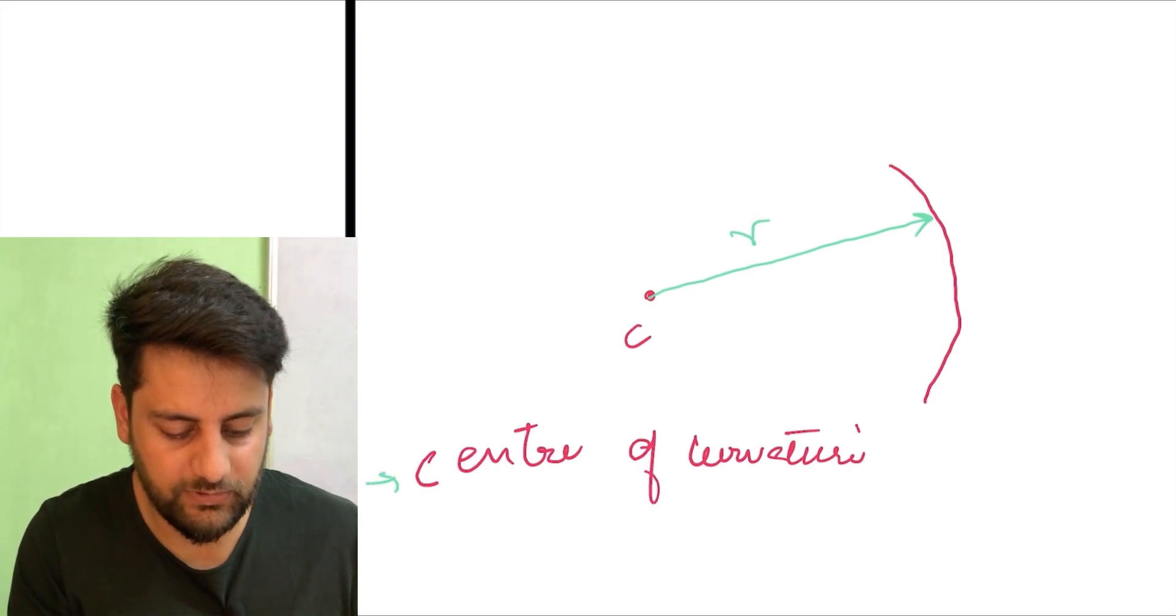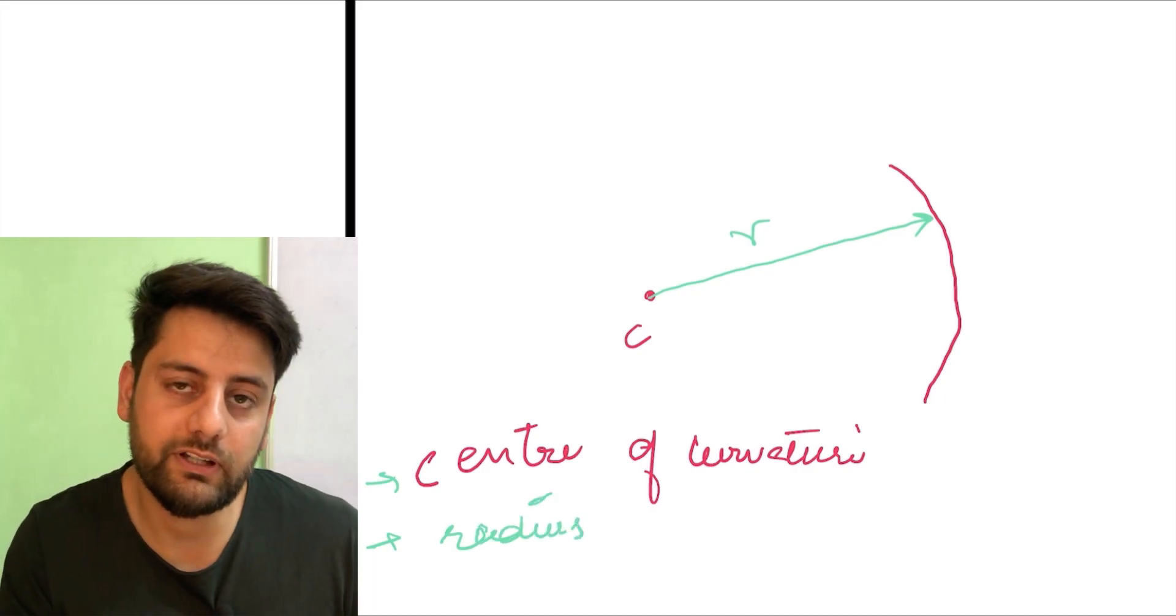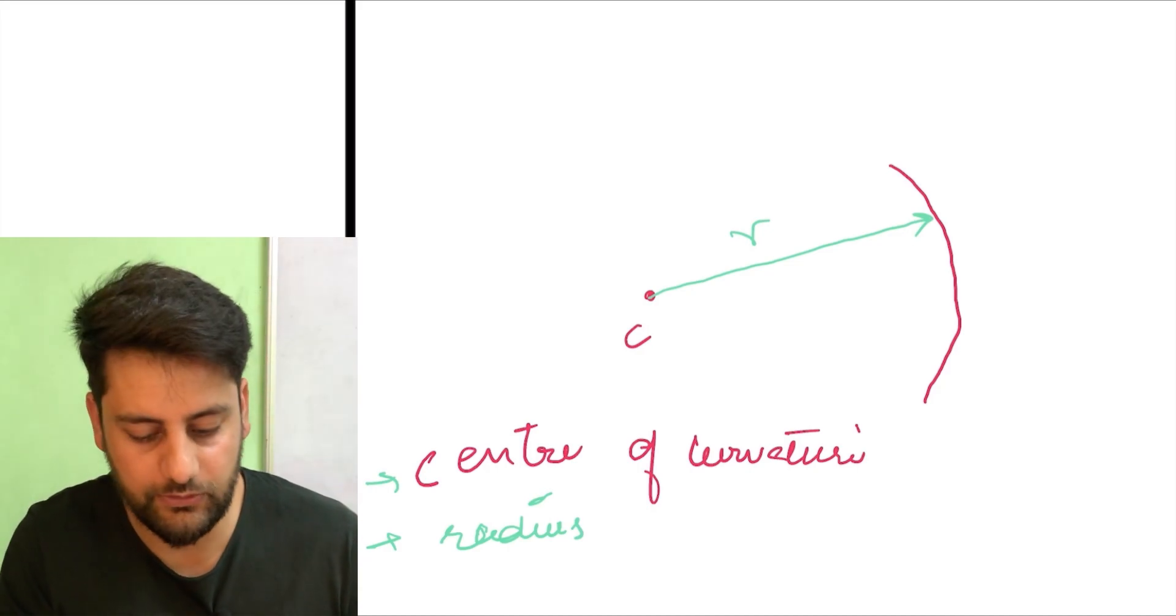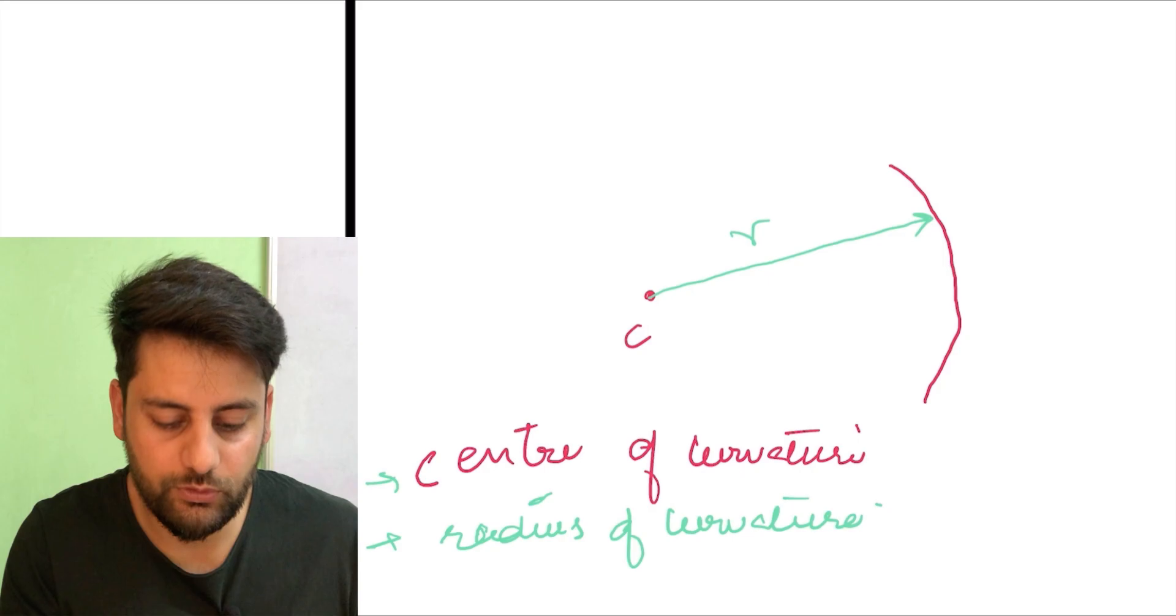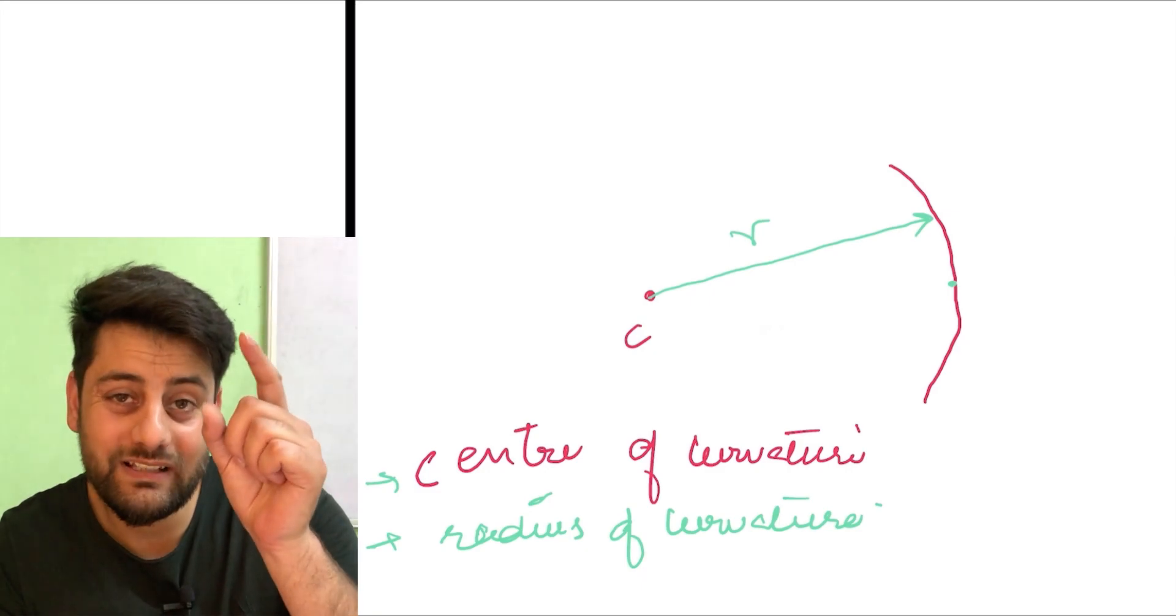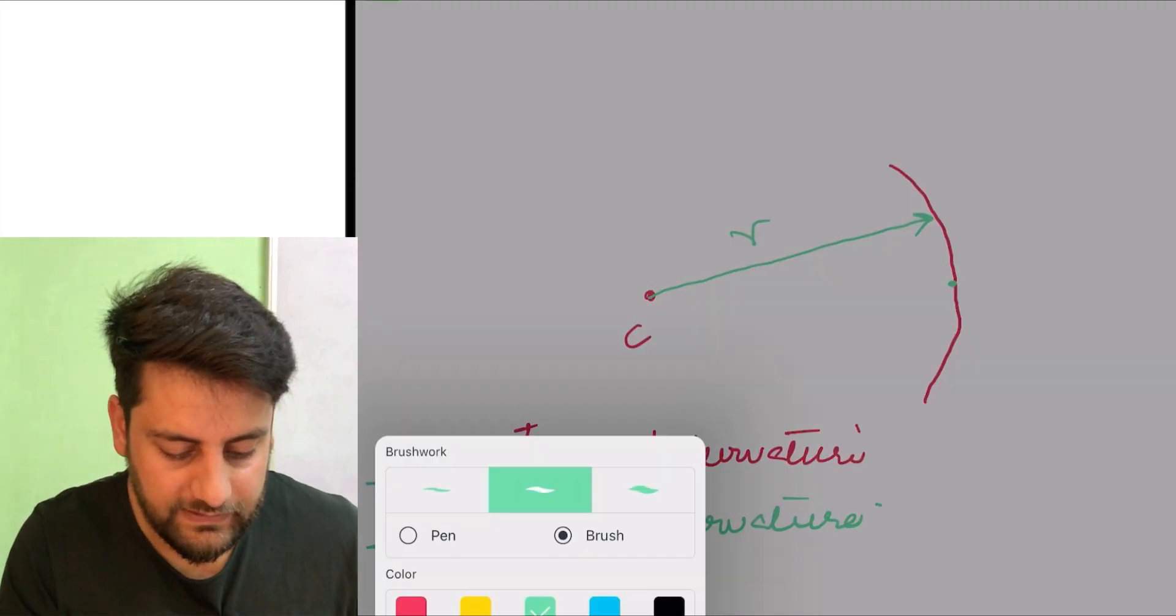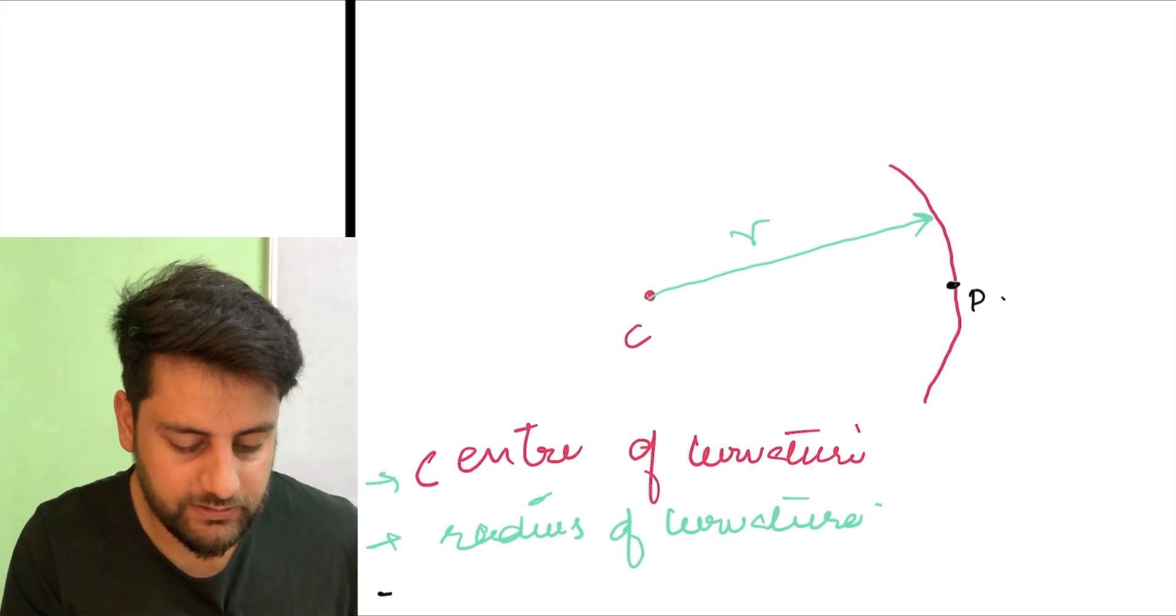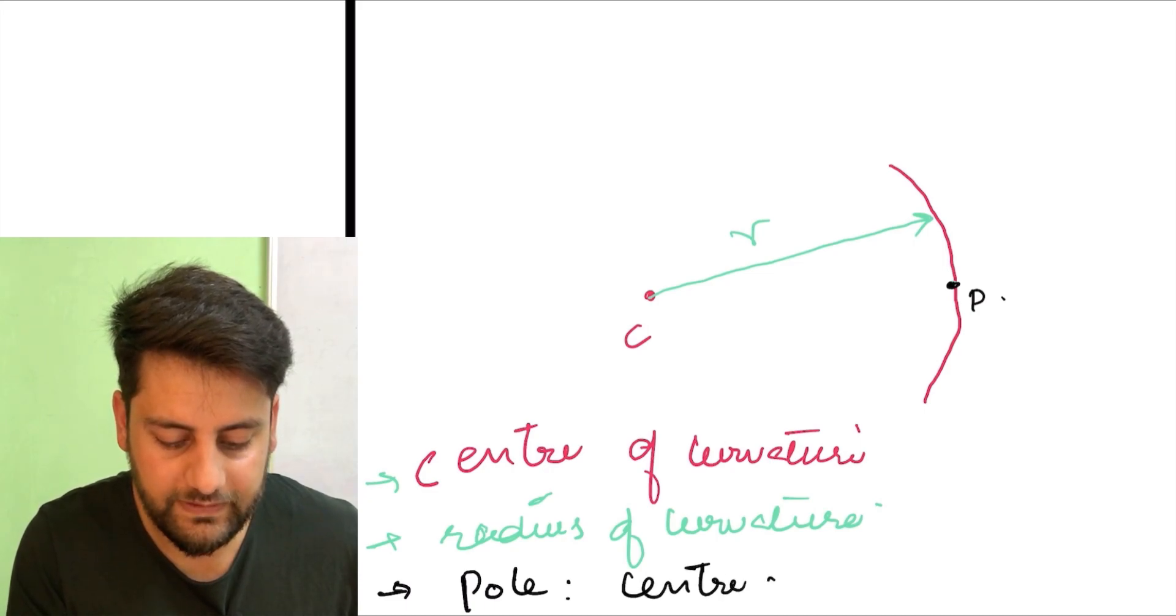So another term we have is radius of curvature. Radius of curvature is nothing but the distance from center of curvature to the mirror. That is known as radius of curvature. Now another term is known as pole. Pole is basically that point, joh is mirror ka center hoga, not sphere ka center, mirror ka center. So suppose main is mirror ke center ko point P se denote kar raha hon. Another term we got here is pole. Pole is nothing but center of mirror.